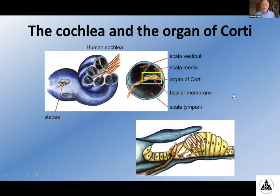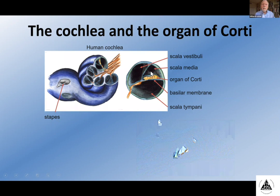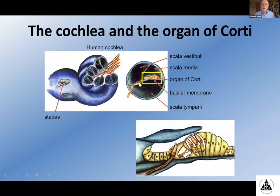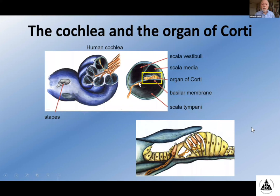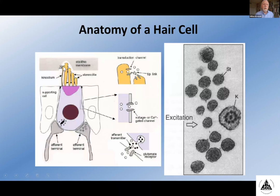Looking more closely at the crown jewels — the organ of Corti — here you can see the eighth nerve, Rosenthal's canal with the auditory nerve fibers, the bipolar ganglion cells that innervate the base of the hair cells and transmit information into the brain. These are the outer hair cells, and these are the inner hair cells. We're going to come back to them in greater detail after first looking at the anatomy of the hair cell and its functional components.